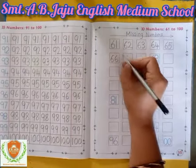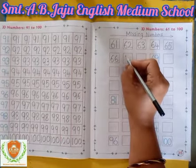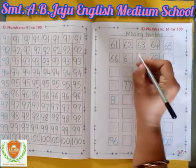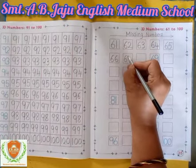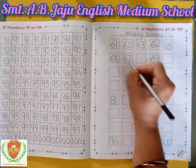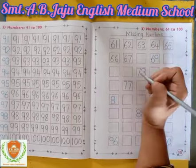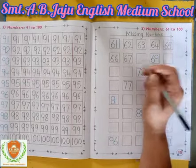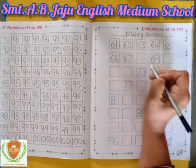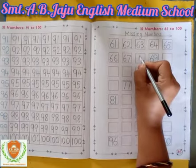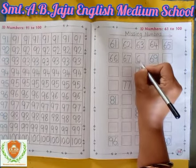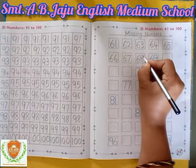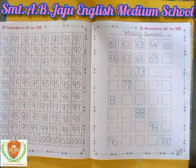After 66, which number will become? Write down 6, then write down 7. 67. After 67, which number will become, student? Write down 6, then write down 8. 68.